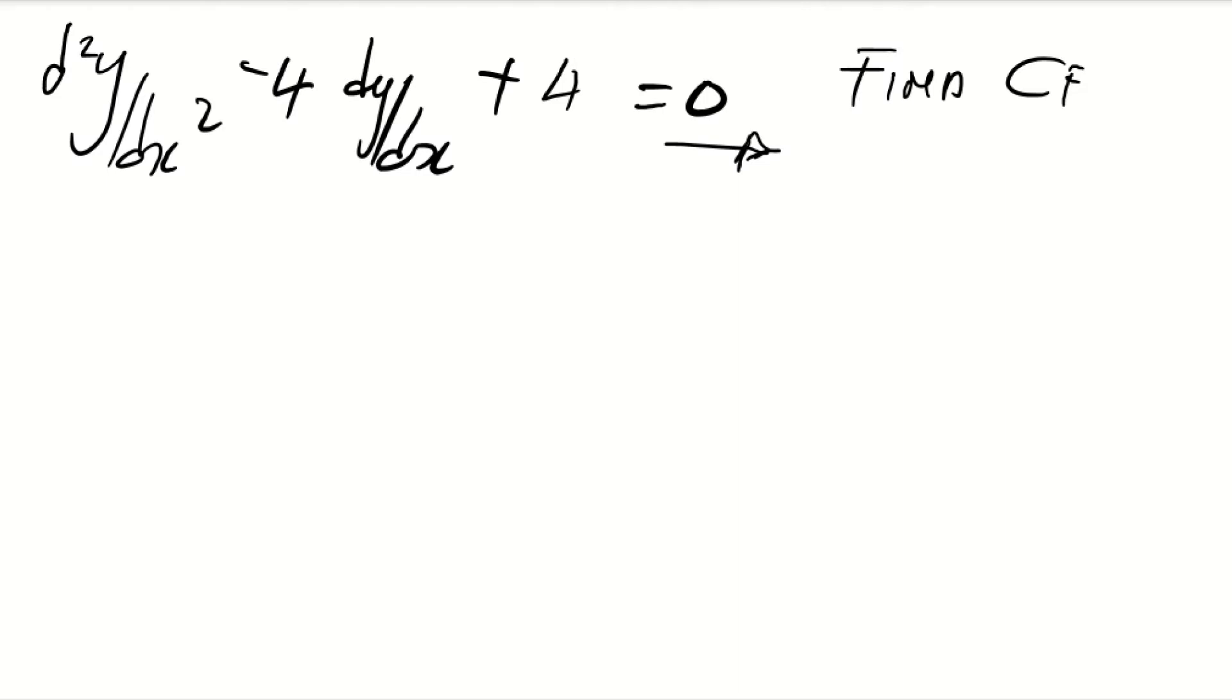Now remember, we convert everything to m. So it's m squared minus 4m plus 4 equals to zero. So now you find the factors here, find the factors.